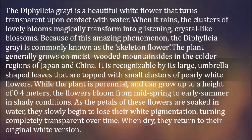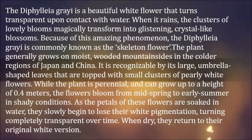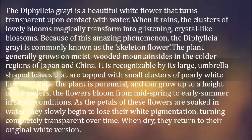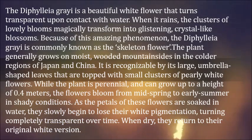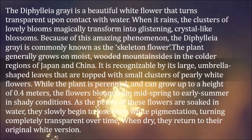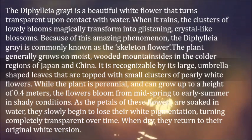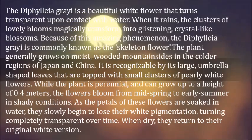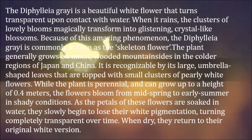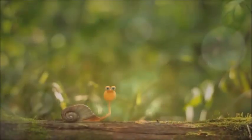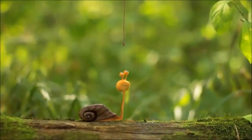While the plant is perennial and can grow up to a height of 0.4 meters, the flowers bloom from mid-spring to early summer in shady conditions. As the petals of these flowers are soaked in water, they slowly begin to lose their white pigmentation, turning completely transparent over time. When dry, they return to their original white version.